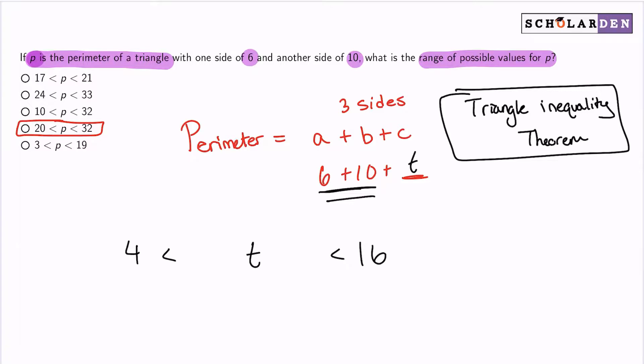Now, remember that we're trying to talk about perimeter though. We want to know the possible values of P, which is the perimeter. So how do we do that though? Well, remember the perimeter is the three sides added together. I don't see the six or the 10 here. So I'm going to go ahead and remember that's going to be 16.